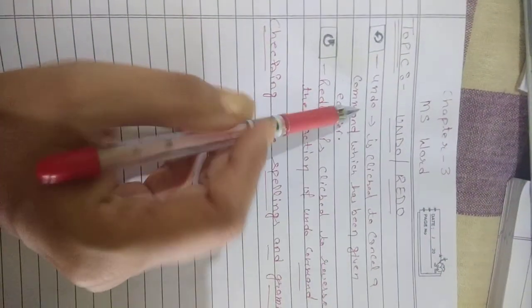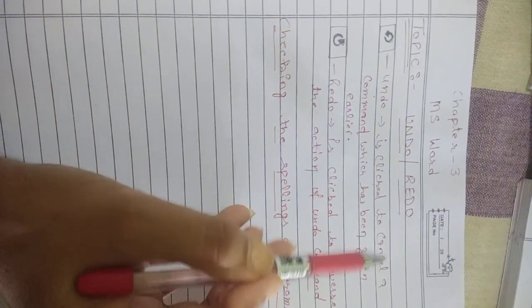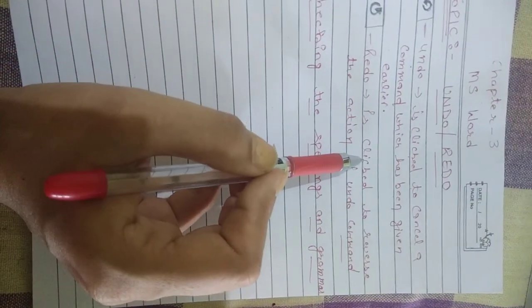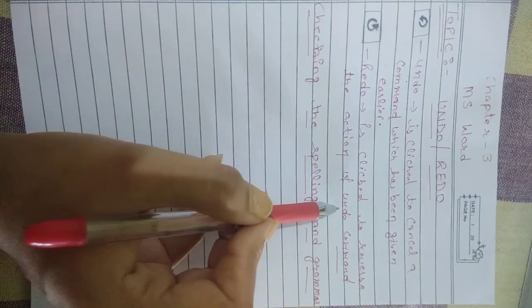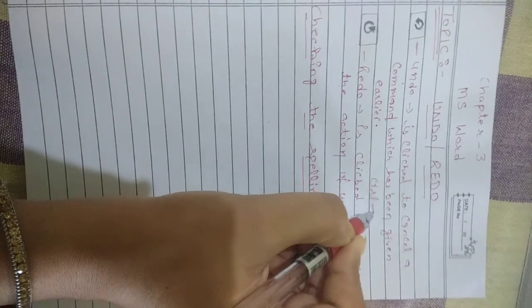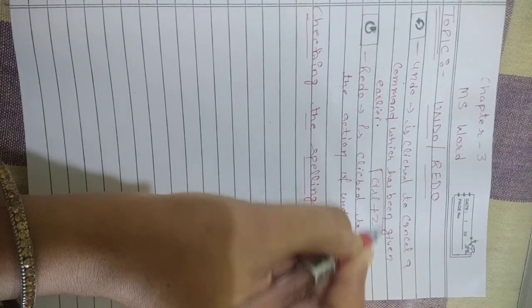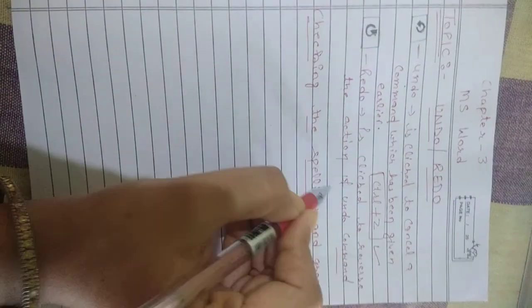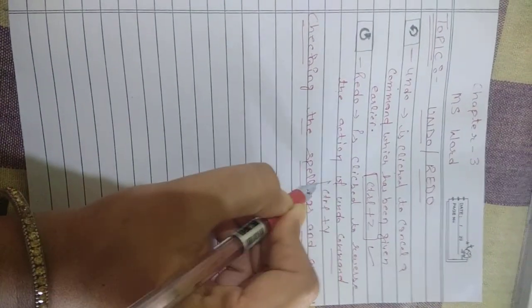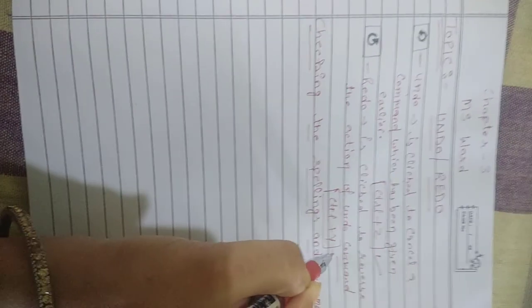To repeat, undo is clicked to cancel a command which has been given earlier, and redo is clicked to reverse the action of the undo command. Control plus Z is the shortcut key of undo, and Control plus Y is the shortcut key of redo.